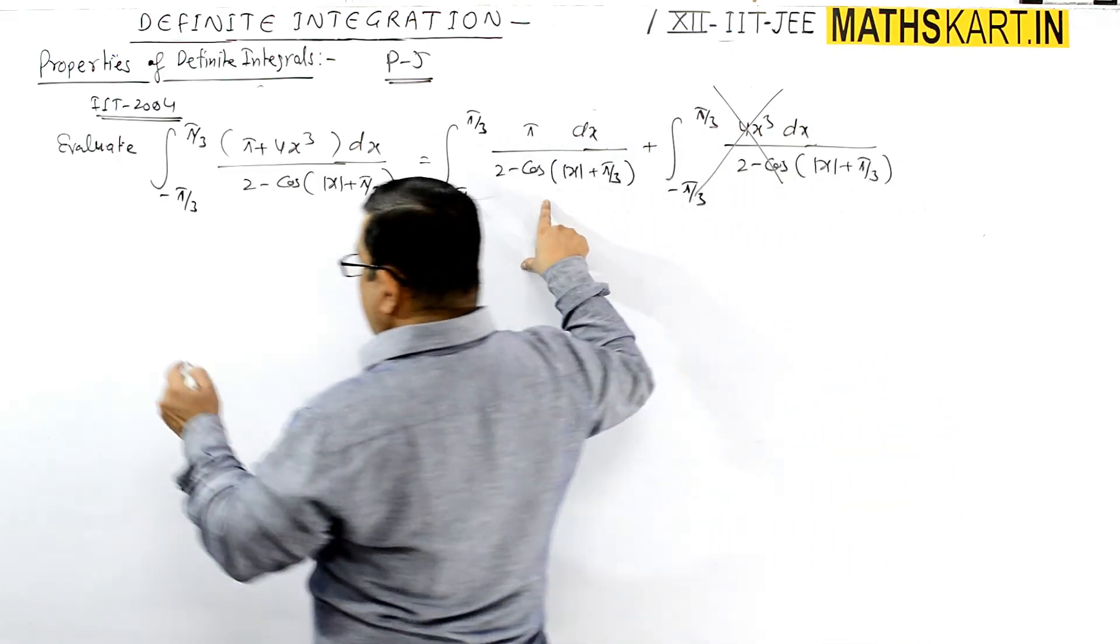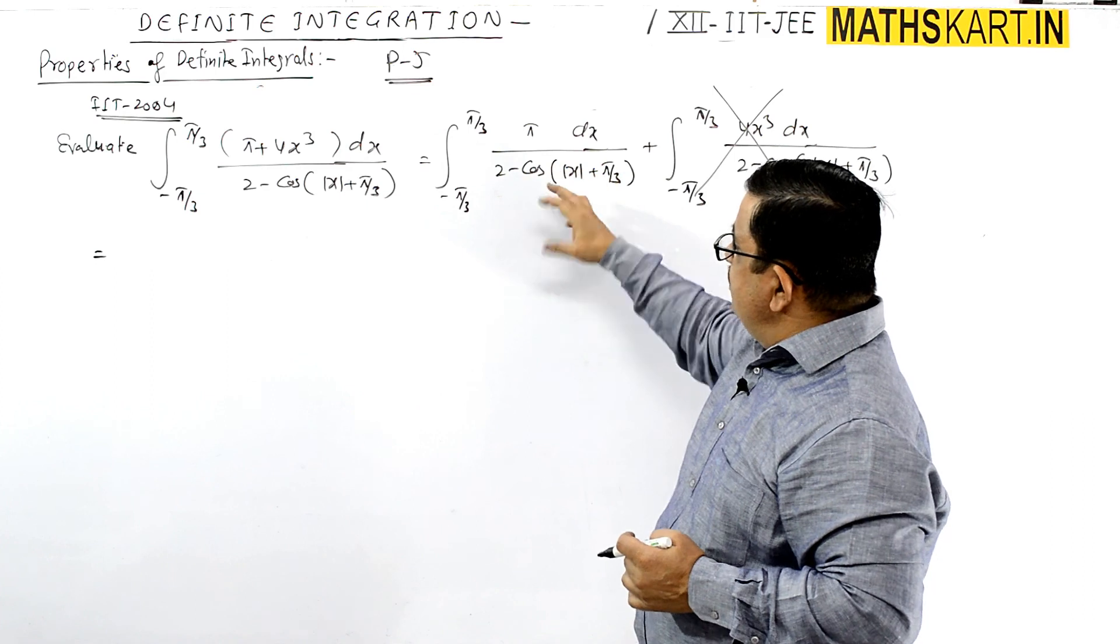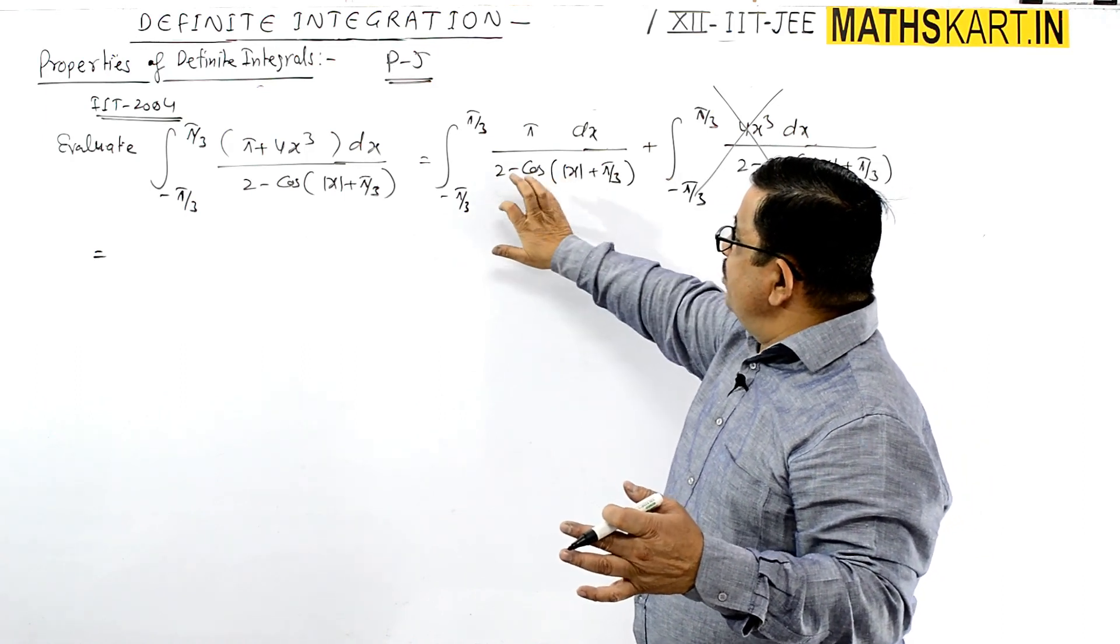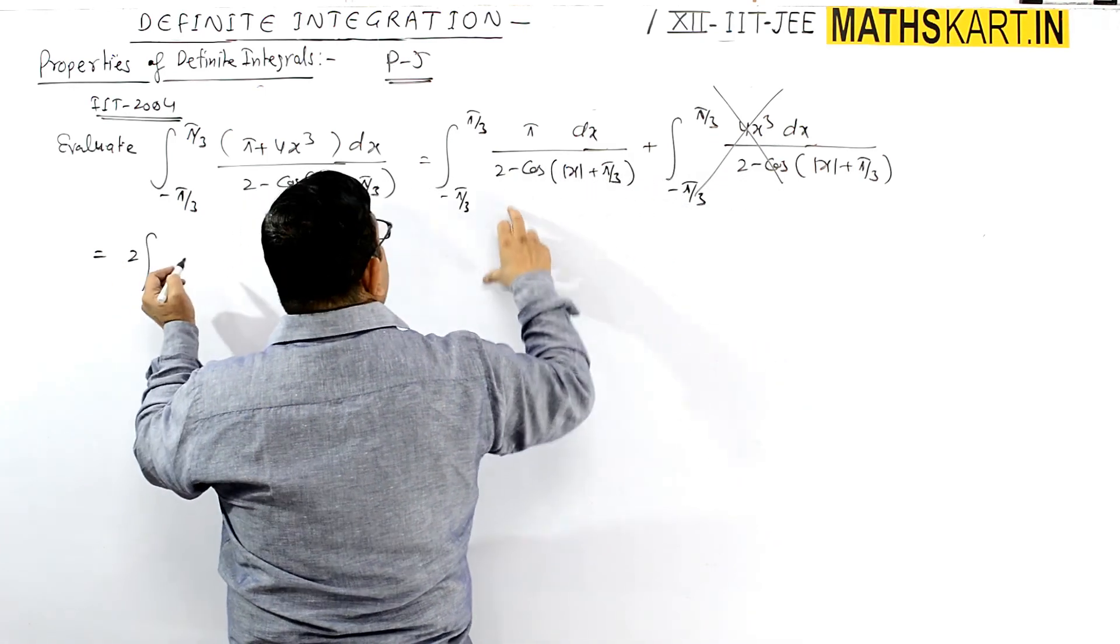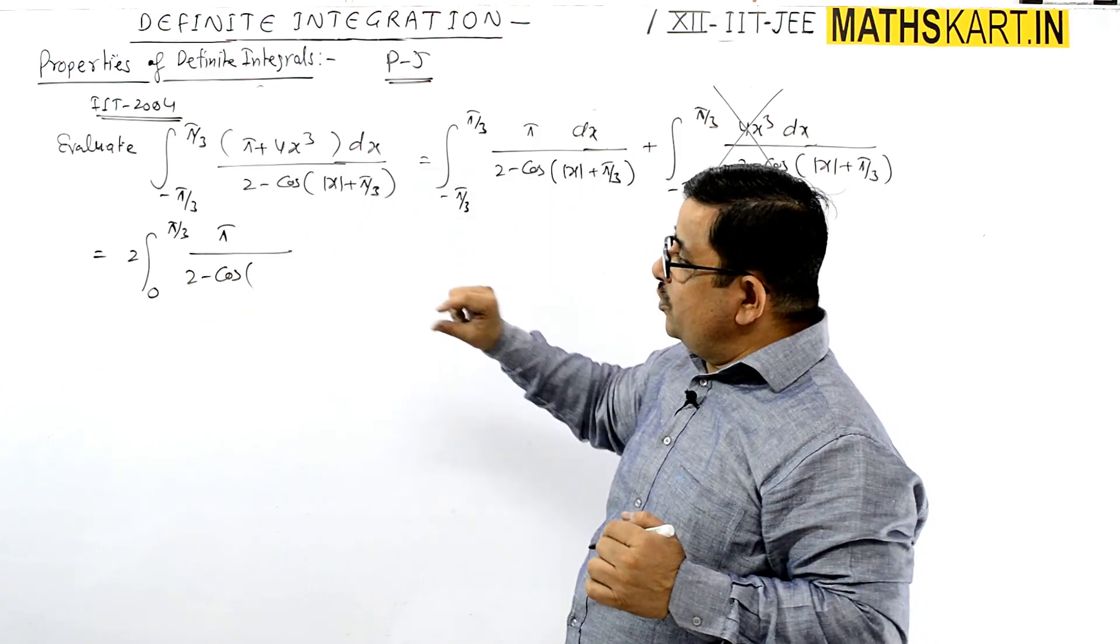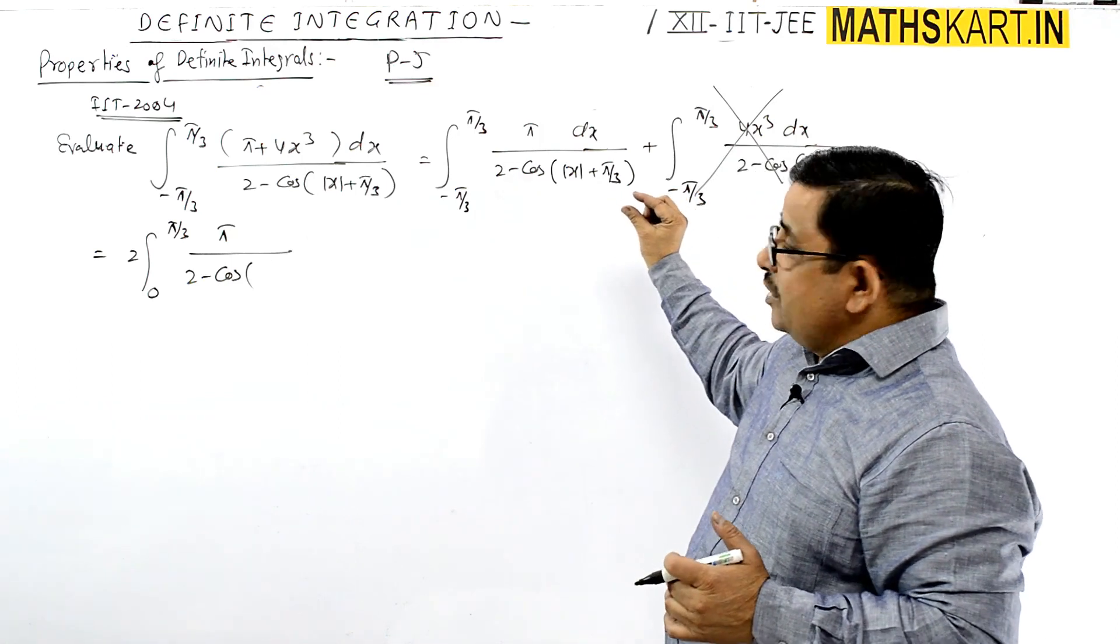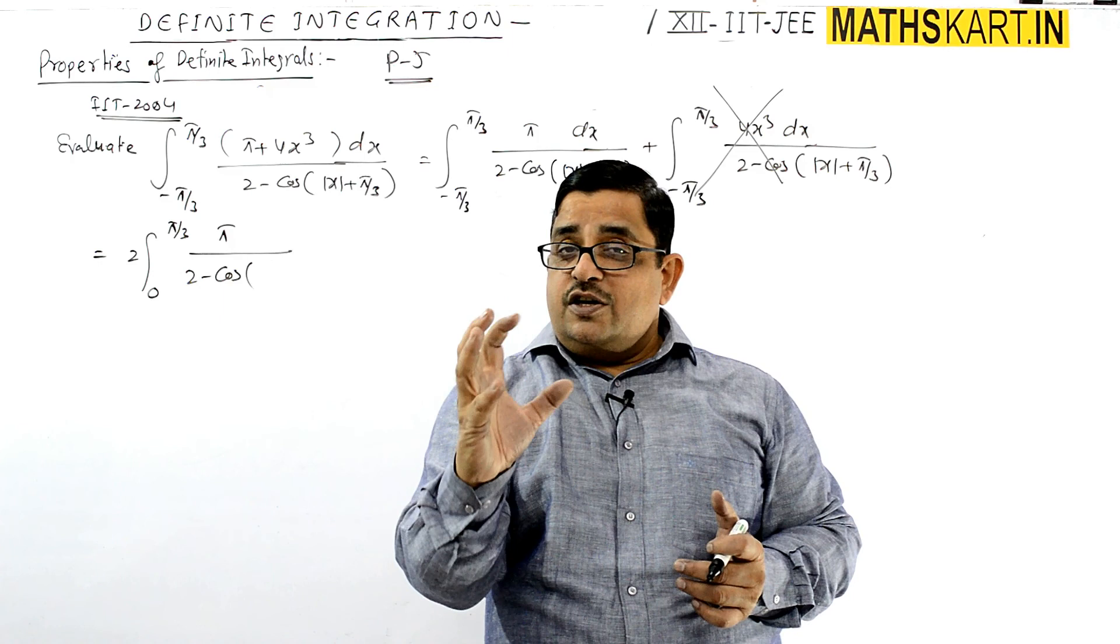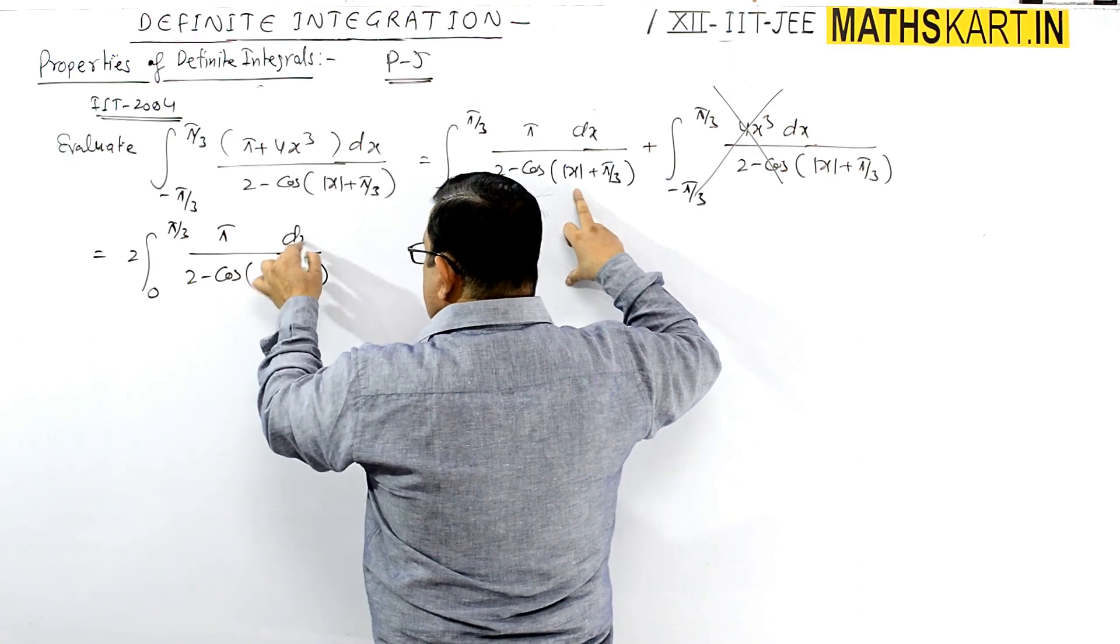The first portion is an even function because the denominator already has |x|, so the value stays the same. Being an even function, double the value: 2 times 0 to π/3 of π/(2 - cos|x + π/3|) dx. Since we're integrating from 0 to π/3, x is positive, so the modulus |x + π/3| becomes x + π/3.